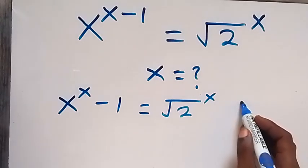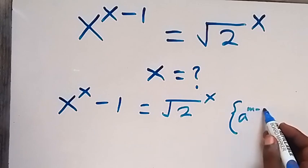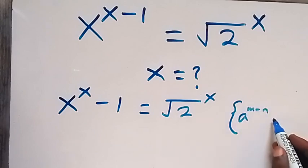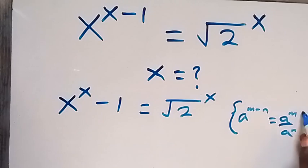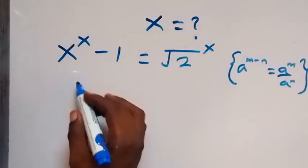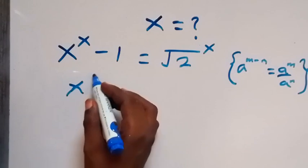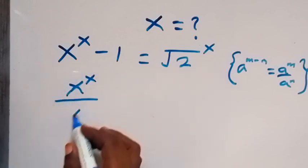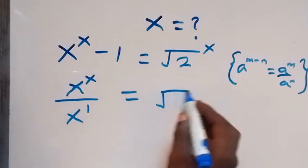From the law of indices, when we have a raised to power m minus n, this can be written as a raised to power m divided by a raised to power n. Applying that here on the left hand side, we can write this as x raised to power x over x raised to power 1.